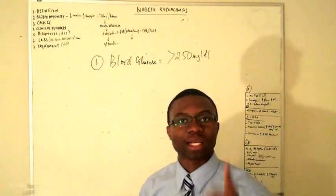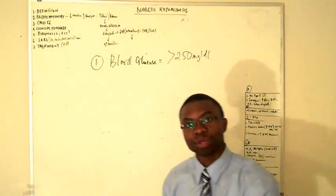Milligrams per deciliter. That is the red flag. It's telling you they're diabetic. They're high blood sugar. Number two.